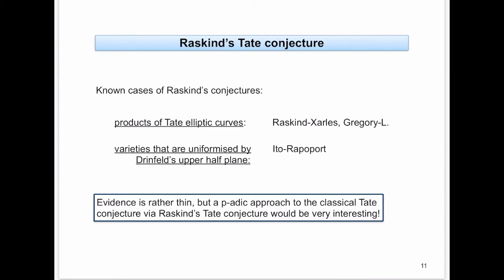In our article it's actually true for products of an arbitrary number of Tate elliptic curves, and it's true for varieties uniformized by Drinfeld's upper half plane, by work of Ito and Rapoport. The evidence is rather thin, but a p-adic approach to the classical Tate conjecture via Raskind's Tate conjecture would be very interesting.